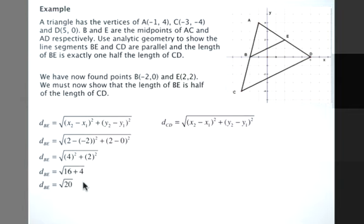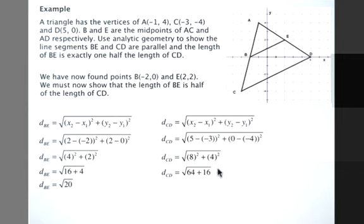For CD, 5 subtract negative 3 squared plus 0 subtract negative 4 squared gives us 8 squared plus 4 squared, 64 plus 16. So the length of CD is the root of 80.